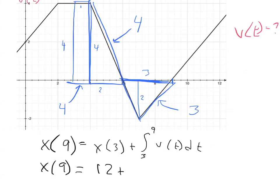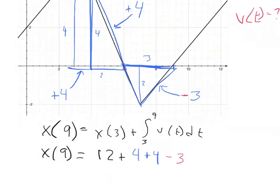But the thing you need to remember is that when you're computing an area like this, when you're computing an integral, I'm sorry, when you're computing an integral, area that's above the x-axis is counted as positive. And area below the x-axis is counted as negative. So overall, this integral here is 4 plus 4 minus 3, because part of that area is below the axis. So now we just compute this thing out. x of 9 is 20 minus 3 is 17.